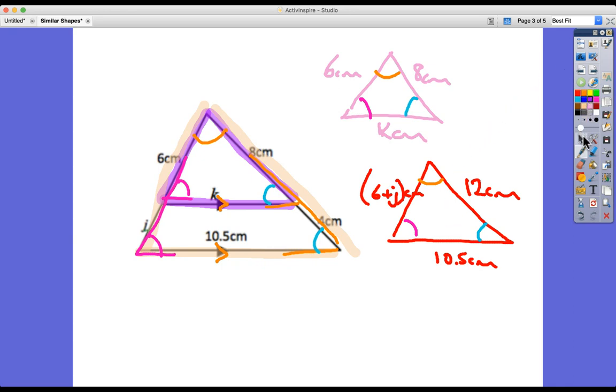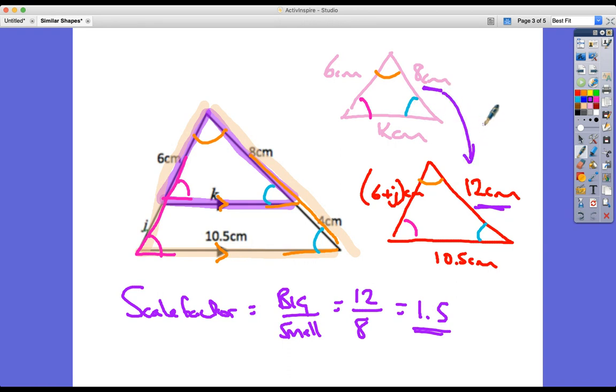So given this information, now what we can do is we can take the pair of corresponding side lengths that we know, and we can use that formula again, which is that scale factor is equal to big divided by small. In this case, we only know one pair of definite numbers in one pair of corresponding sides that have definite numbers. And it's the 12 and the eight. So 12 divided by eight is 1.5. So we know that this triangle down here is 1.5 times bigger.